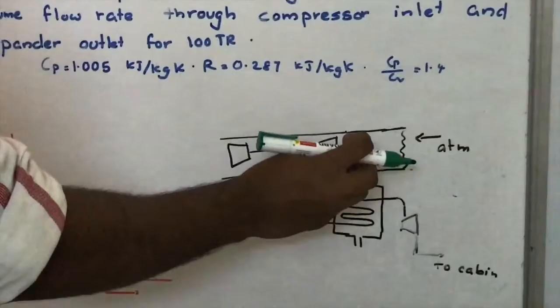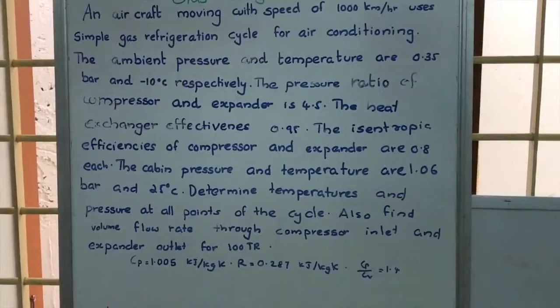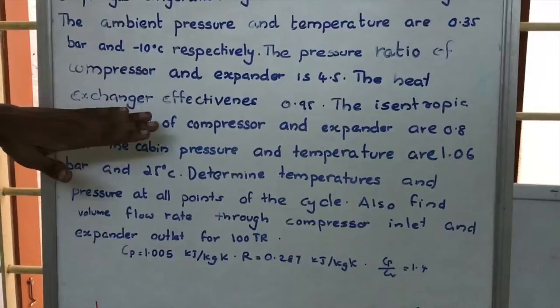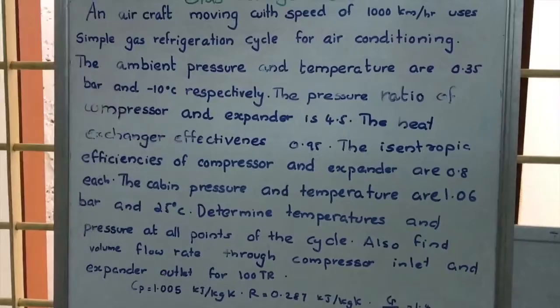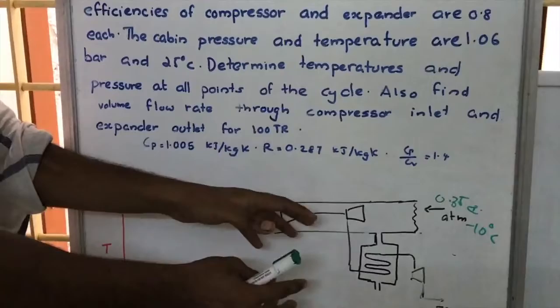From the atmosphere, air will be entering through this conduit to the main compressor. The ambient pressure and temperature are 0.35 bar and minus 10 degree Celsius. The aircraft is moving with a speed of 1000 km per hour, meaning ambient air is stagnant and the aircraft is moving with a velocity of 1000 km per hour.